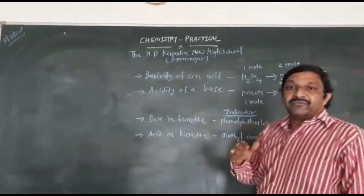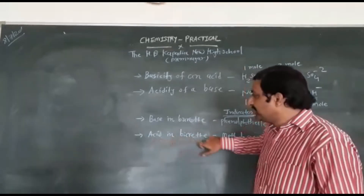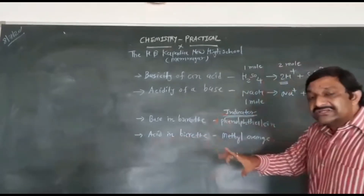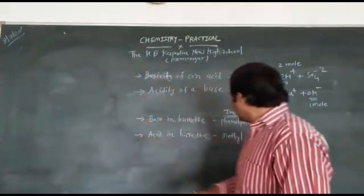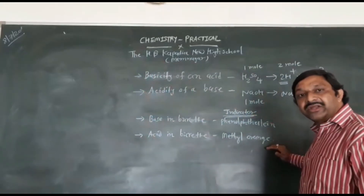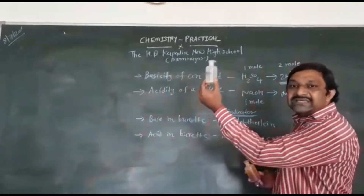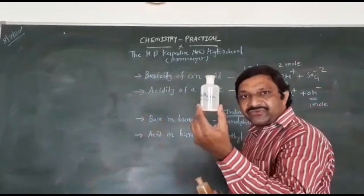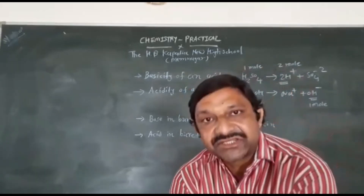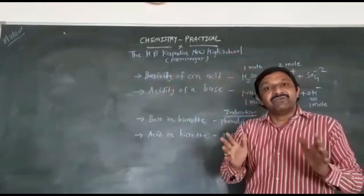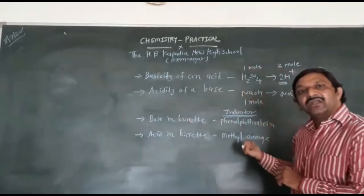So in acid-base titration we will use two indicators: first one is phenolphthalein indicator, and second one is methyl orange indicator.